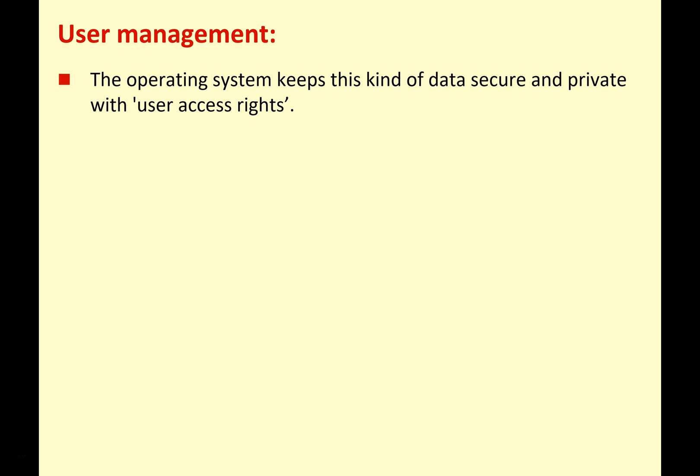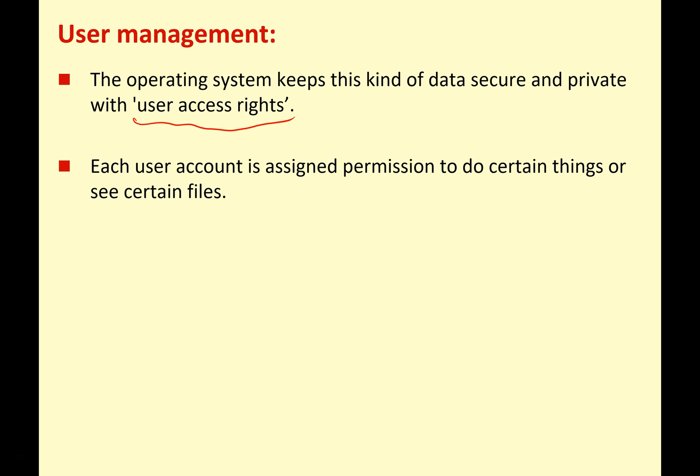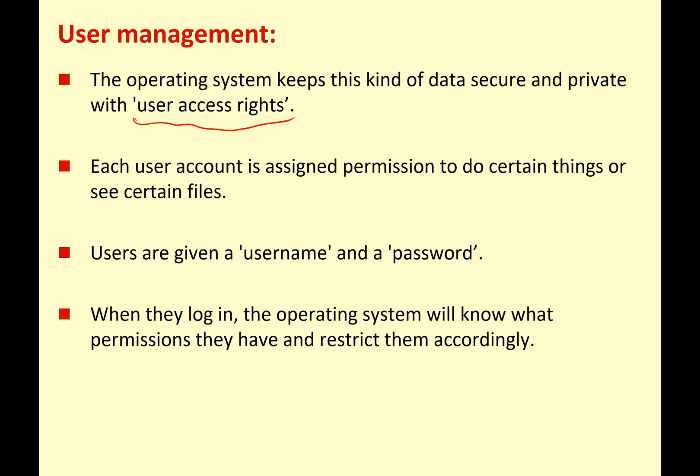The operating system keeps this kind of data secure and private with what we call user access rights. Each user account is assigned permission to do certain things or see certain files. Users are given a username and password to identify them. When they log in, the operating system will know what permissions they have and will restrict them accordingly. So if the manager of a company logs in, they can see different files and folders than a less important employee. Similarly, a network administrator can do a lot more things with the operating system than a regular user.